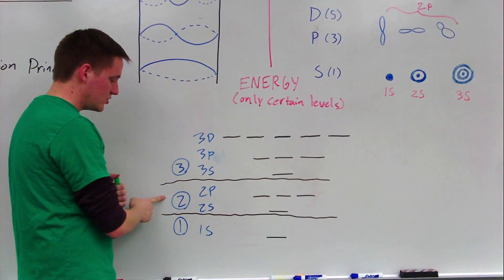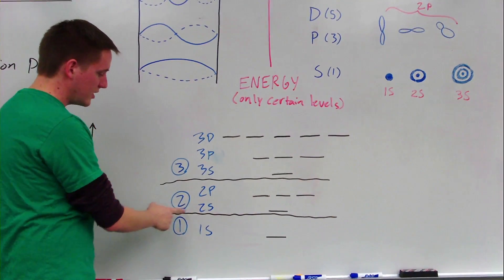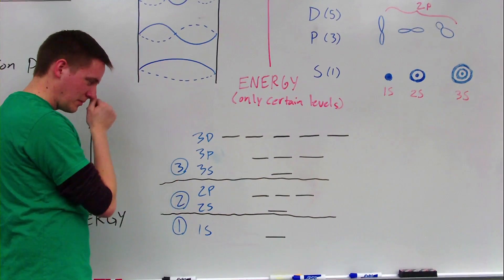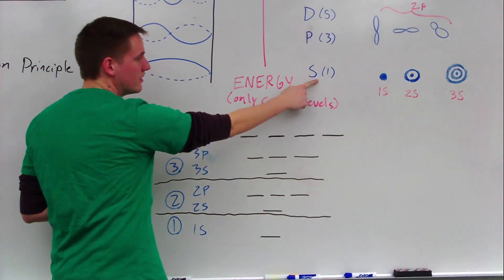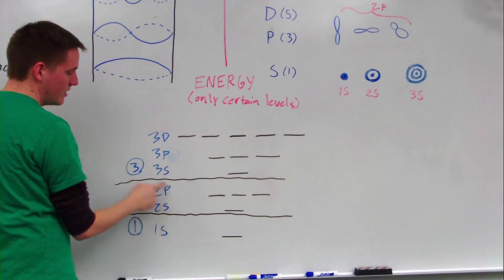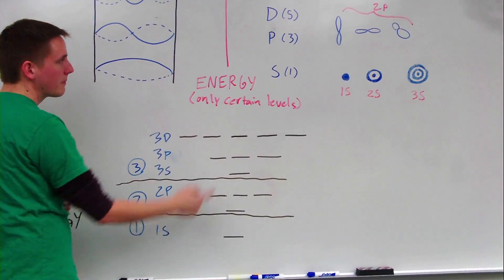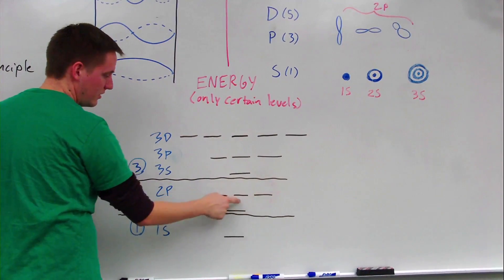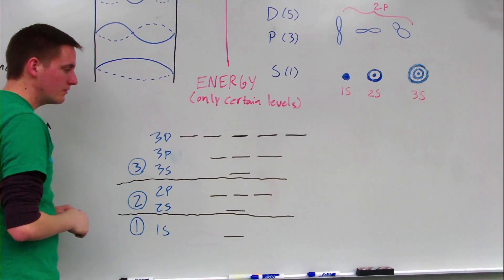We go up to the second shell. And in the second shell, we have two s orbital and two p orbitals. s orbitals always come in groups of 1. So that's why we have 1 in each right here. And even in the 3s, we have 1. p orbitals come in sets of 3. So, we're just going to put three p orbitals right there.